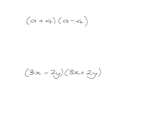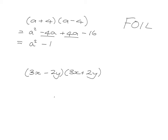I've got another two for you to try — pause the video, multiply out, and use FOIL to help you remember. For (a-4)(a+4): First — a times a is a squared. Outside — minus 4 times a is minus 4a. Inside — 4 times a is 4a. Last — minus 4 times 4 is minus 16. The like terms minus 4a and plus 4a cancel out, giving a squared minus 16.